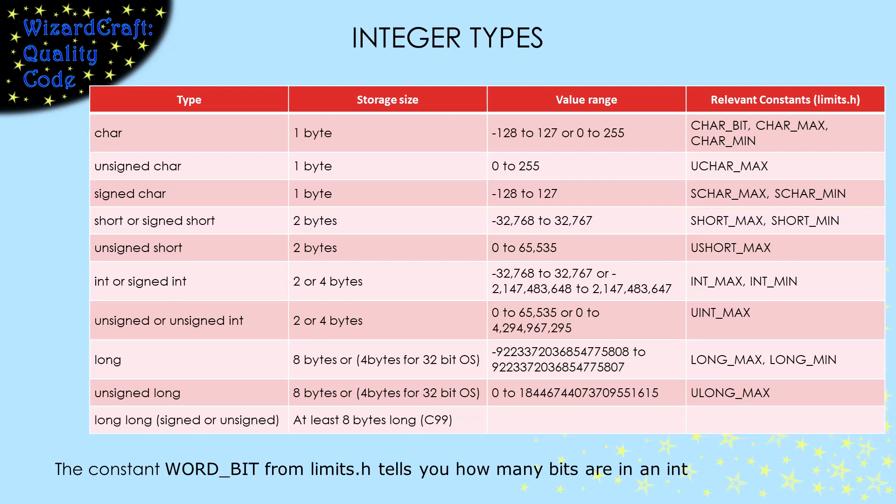For all of the integer types, except char, you can put the word unsigned or signed before them to be specific about whether you want them to hold negative numbers. Except for char, they default to signed. Interestingly, if you use the type unsigned by itself, you get an unsigned int.